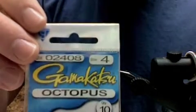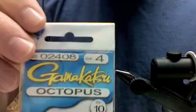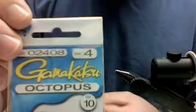My favorite egg hook right now is a 02-408 Gamagatsu octopus hook. I'm just using a size 4. We could also do size 6's for the Pere Marquette.